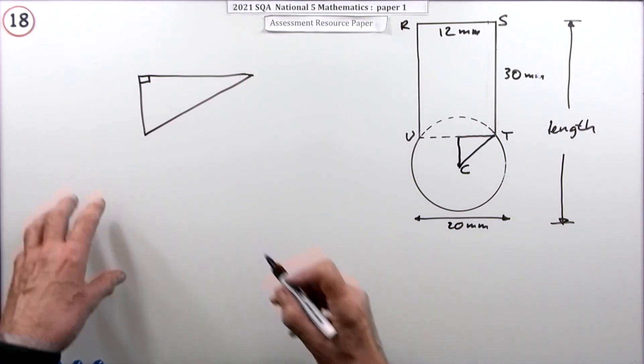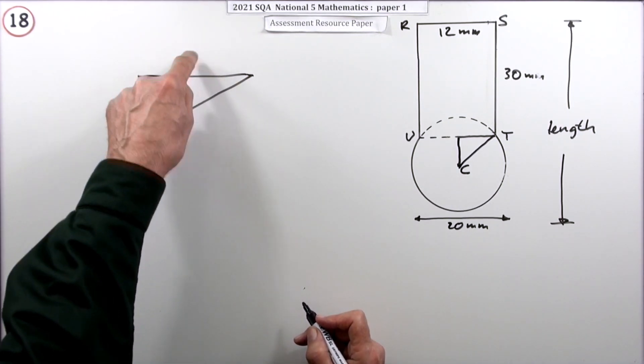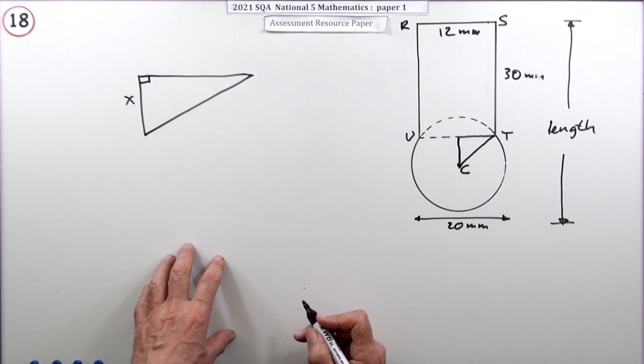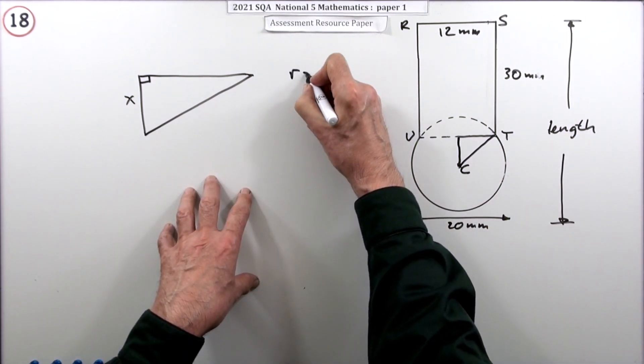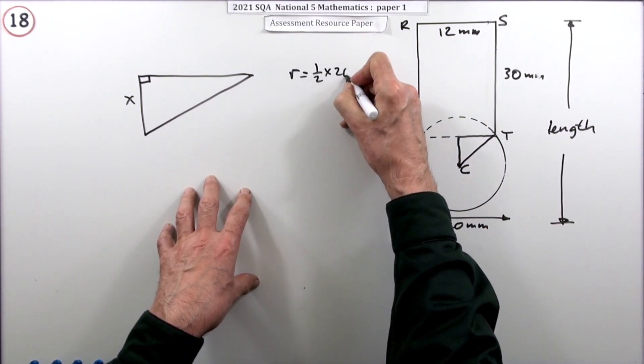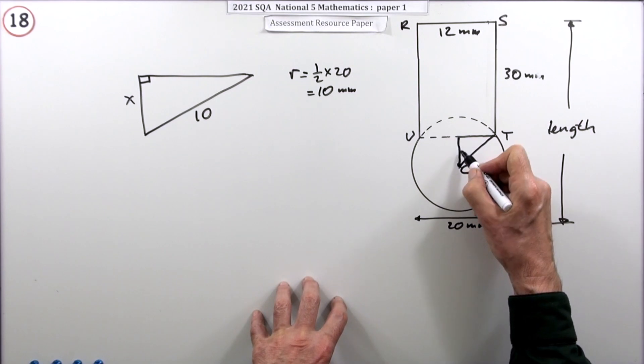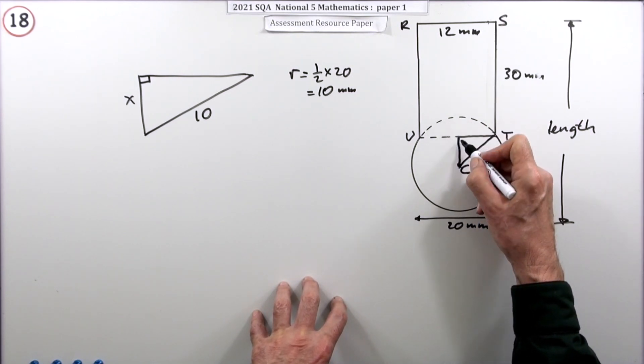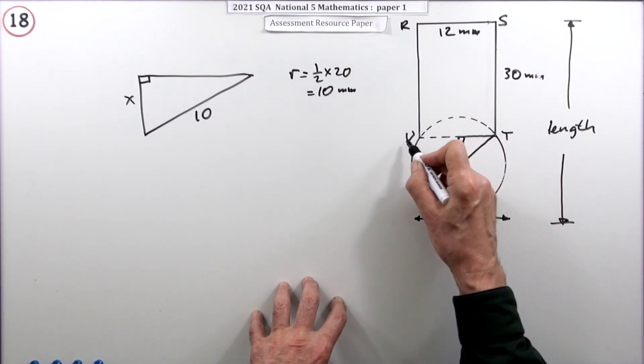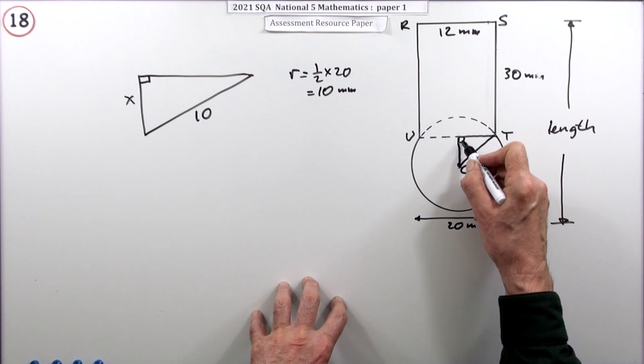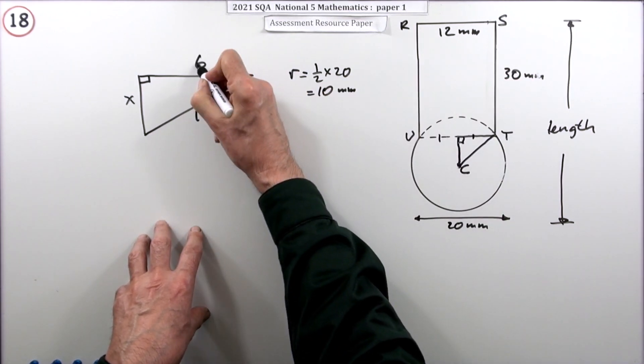Extract this little right angle triangle. I'll call that part x - I don't know that part but I do know these two because the distance from center to any point on circumference is a radius. The radius is half of 20, so 10 millimeters. If that part of the radius is at right angles to that chord which is horizontal, then it must bisect it. So that distance must be half of the 12, which is six.